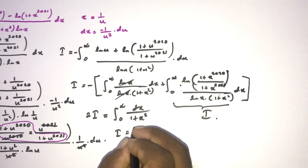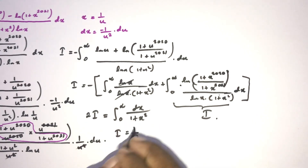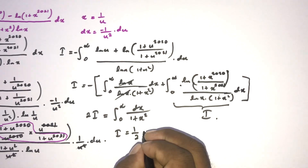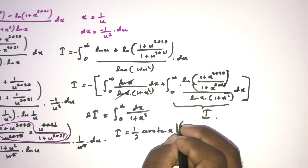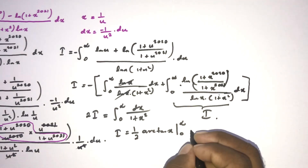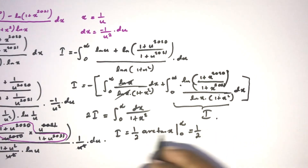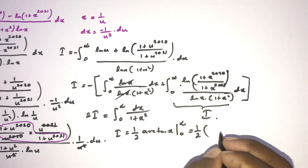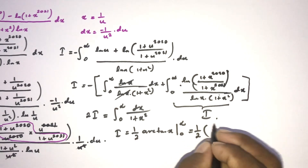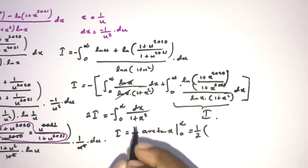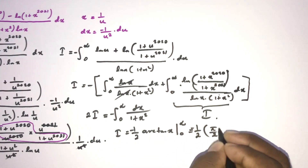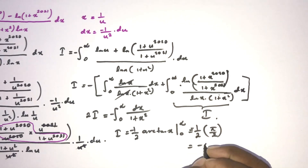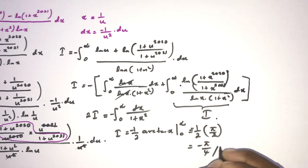Isolating I, we get I = one-half times the integral of dx/(1 + x^2). We know this equals arctan(x) evaluated from 0 to infinity. Applying the limits: arctan(infinity) = π/2 and arctan(0) = 0. So I = (1/2)(π/2) = π/4. However, accounting for the minus sign from our earlier steps, the final answer is I = -π/4.